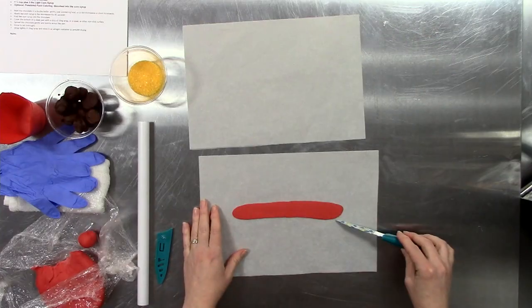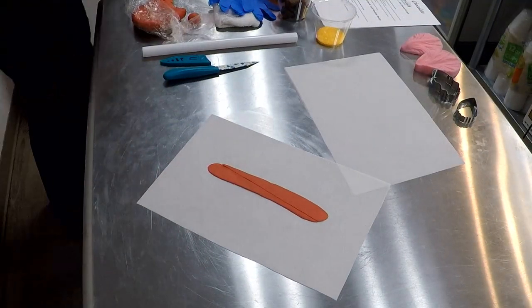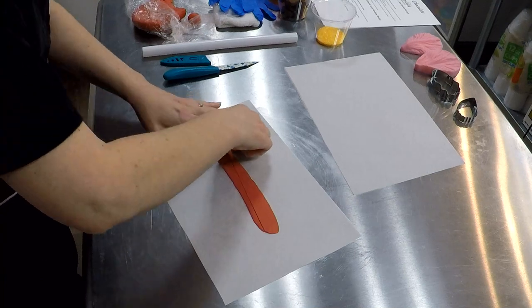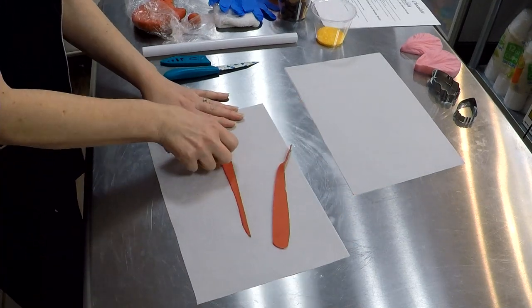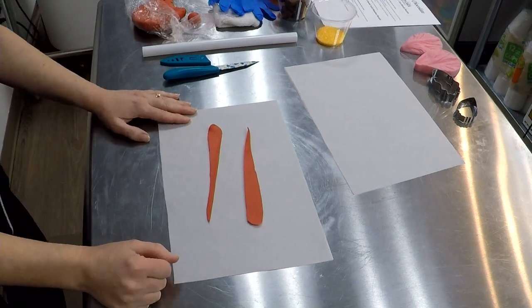We're going to cut this into two pieces across the diagonal, straight across like that. Now this is probably stuck a little bit to the parchment, it might be a little warm. We're going to peel it up and release it from the parchment.